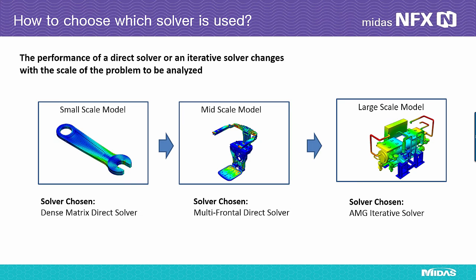As explained earlier, the performance of a direct solver or an iterative solver changes with the scale of the problem to be analyzed, for which MinusFX provides a function making an automatic selection between the two. When automatic selection is checked, an appropriate solver is used based on the problem size: the direct solver using the dense matrix is selected for a small-scale problem, the multifrontal solver is selected for a mid-scale problem, and the AMG iterative solver is selected for a large-scale problem. The criteria for automatic selection are determined based on the nodes or number of elements specified by the user if the empirical condition is known, or by the program based on the number of degrees of freedom and system memory size if unknown.